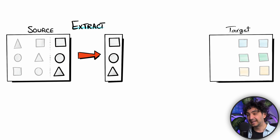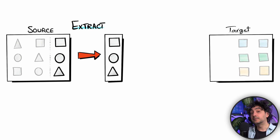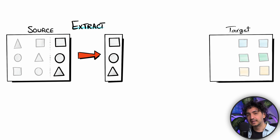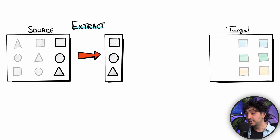The Extract step has only one task: to identify the data that you have to pull out from the source and to not change anything. We will not manipulate the data at all — it stays as it is, one-to-one like the source system. This is the first step in the ETL process.